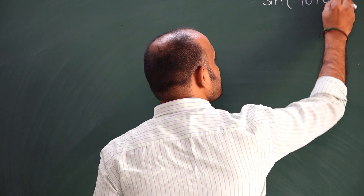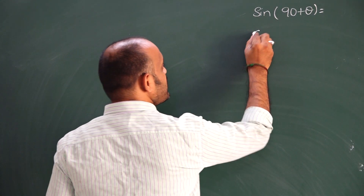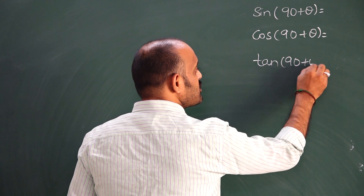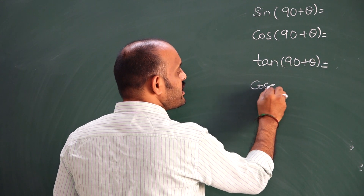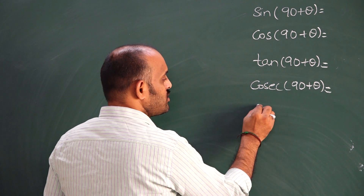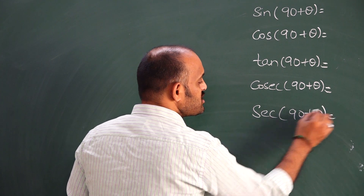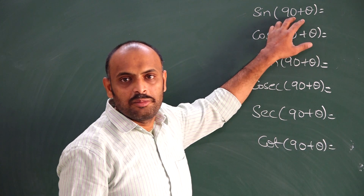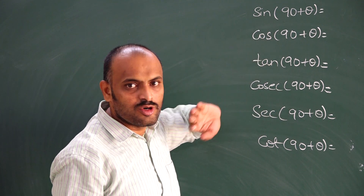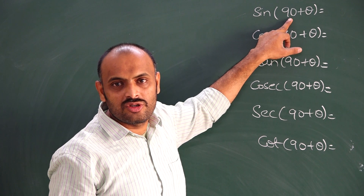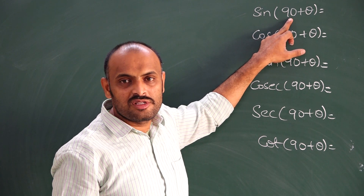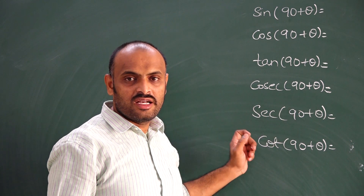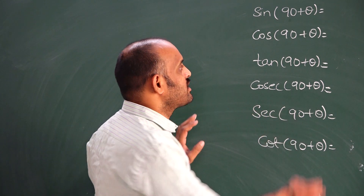What is sin(90+θ)? What is cos(90+θ)? What is tan(90+θ)? What is cosec(90+θ)? What is cot(90+θ)? Now, 90+θ means second quadrant. In the second quadrant, sin is positive. 90 means 90 into 1, so odd multiples of 90. For odd multiples of 90: sin converts to cos, cos converts to sin, tan converts to cot, cot converts to tan, secant converts to cosecant, cosecant converts to secant.